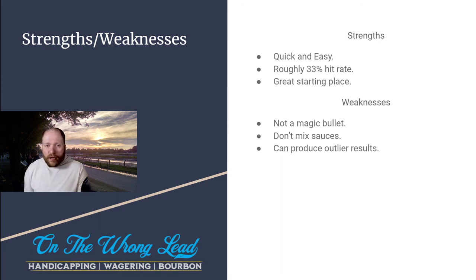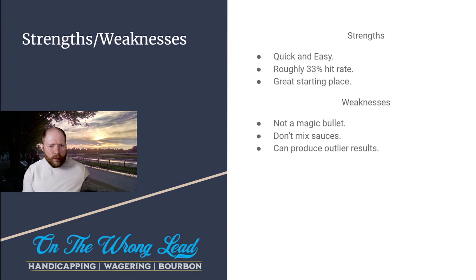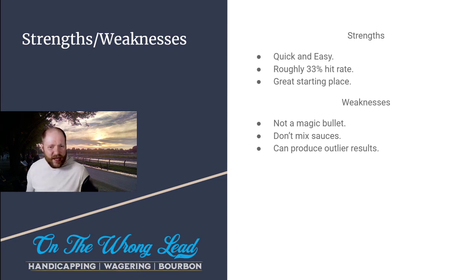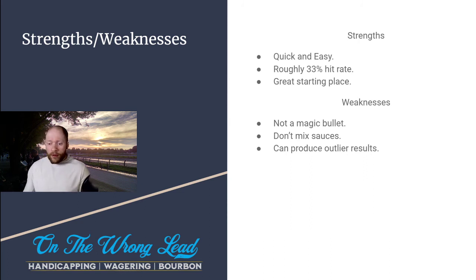Weaknesses: speed figures are definitely not a magic bullet. A lot of people getting into horse racing will struggle and then think they need a different speed figure product, constantly chasing the next best thing without really learning how each product is different. There's no product where you can just pick the highest number and always be profitable. You have to analyze — there has to be a layer on top of just picking the biggest number.